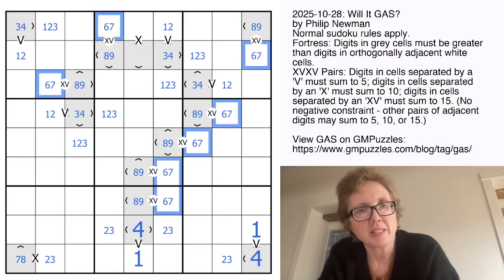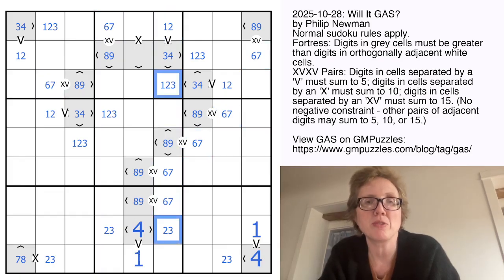So from there, the next place I looked was this column, column 6, and I noted that I have 1, 2, 3, and 4 here, and then these three form a 1, 2, 3 triple. That makes this a 4.